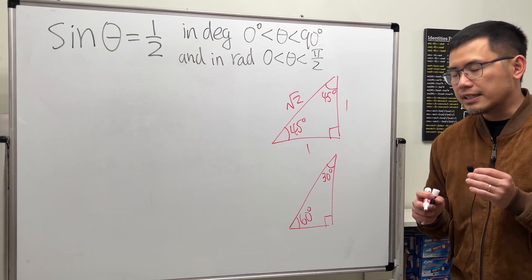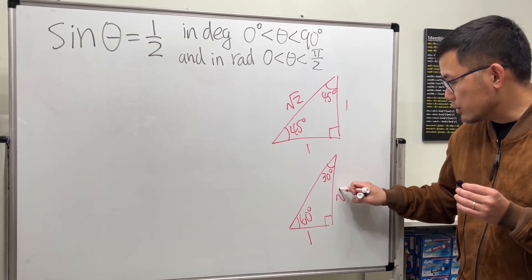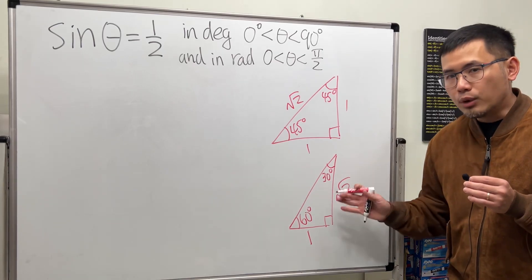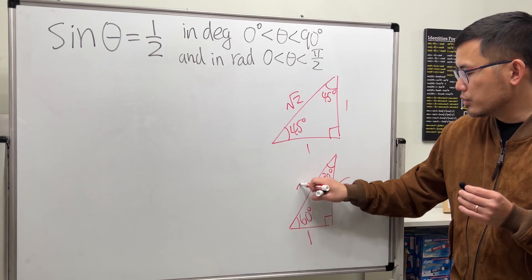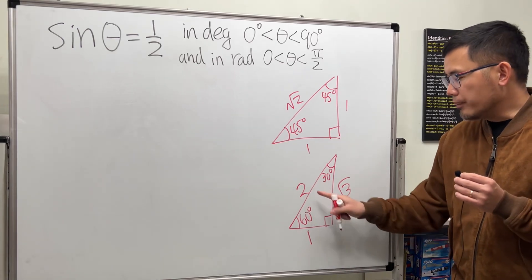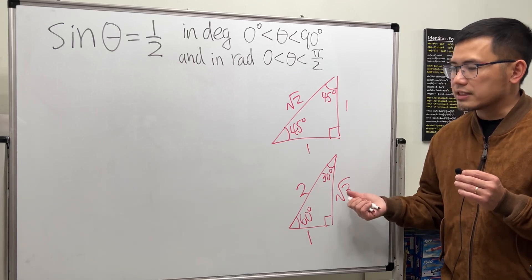Now the ratio of the sides are: the shortest side is 1, the longer side is square root of 3, and the longest side, the hypotenuse, is 2. Be careful though. 2 is bigger than square root of 3. Make sure you remember the ratio of the sides.